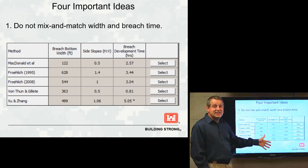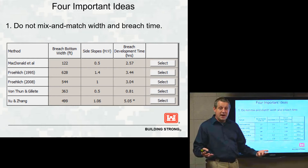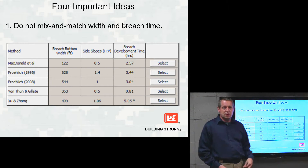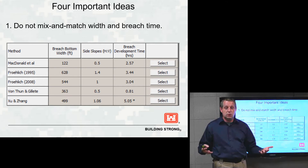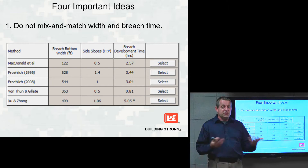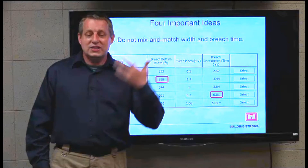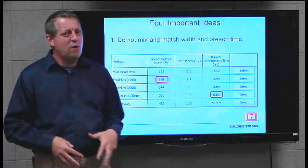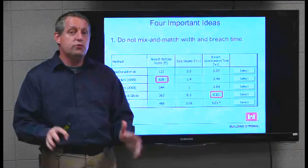If you run all five equations, the answers are going to vary pretty dramatically. That will give you a sense of your uncertainty. Some equations will be more useful than others, but in general they'll show you the range of possible results. You don't want to choose just the worst case or best case scenario — you want to run the range to see if your model is sensitive to it. If it is, report that uncertainty.